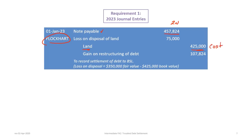We then have a loss on disposal of land determined as the book value of $425,000 minus the fair value of $350,000, giving a loss of $75,000. The last item — the gain on restructuring of debt — is a plug or calculated number to make the journal entry balance, since debits must equal credits. We end up with a credit to record the gain on restructuring of the debt. The description, of course, is to record the settlement of the debt to BSL.